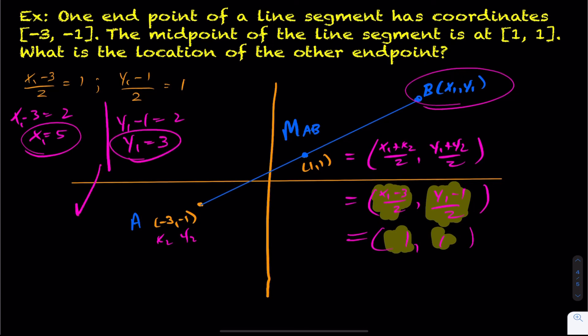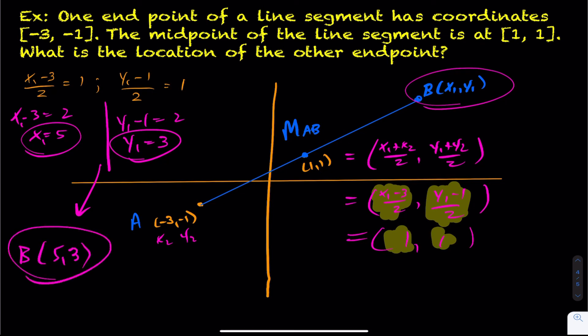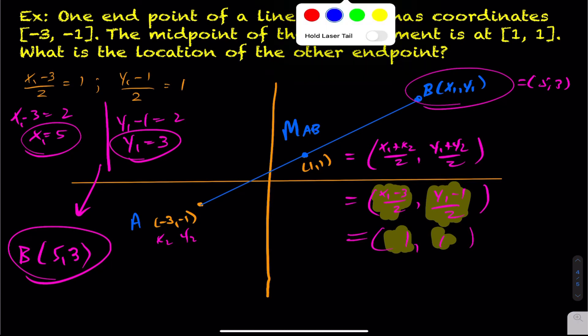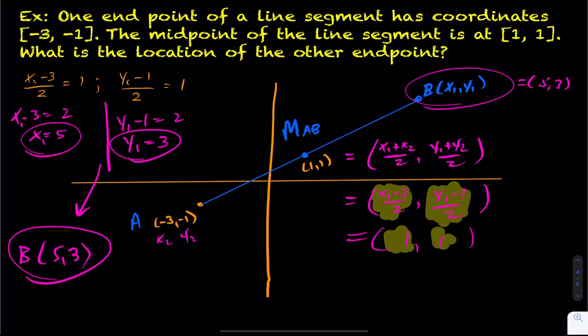Therefore, point B is (5, 3). That's the twist on what you're used to seeing: using the midpoint formula where they give you one endpoint and the midpoint, and you unwind it to find the other endpoint.